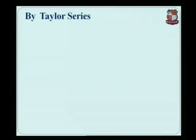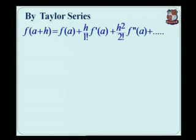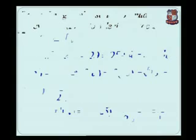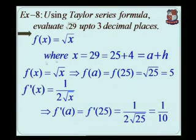By the Taylor series formula derived earlier, f(a plus h) is equal to f(a) plus h upon 1 factorial times f'(a) plus h squared by 2 factorial times f''(a), and so on. In this example, x is equal to 29, that is 25 plus 4, so the value of a is 25 and h is equal to 4.